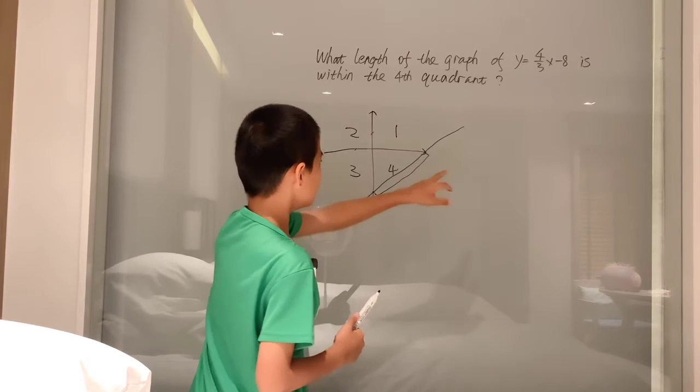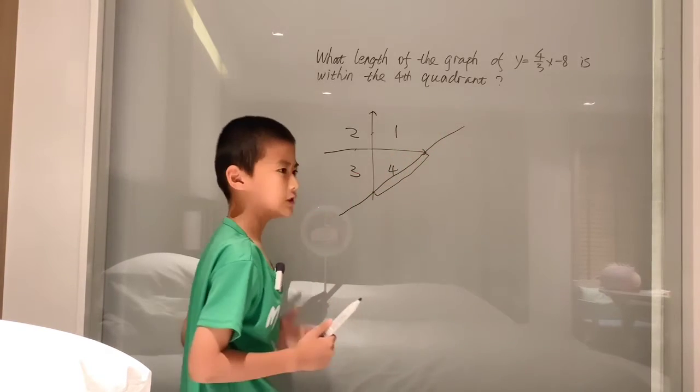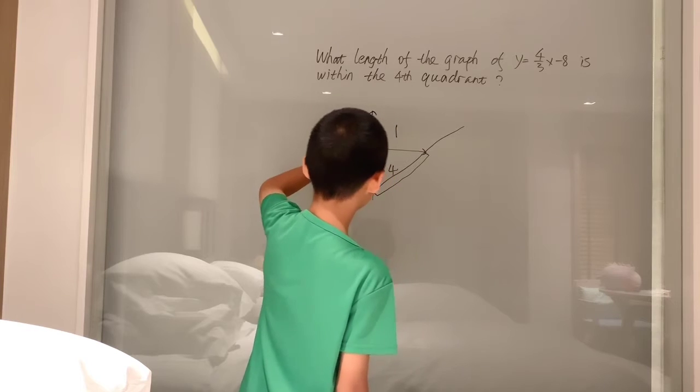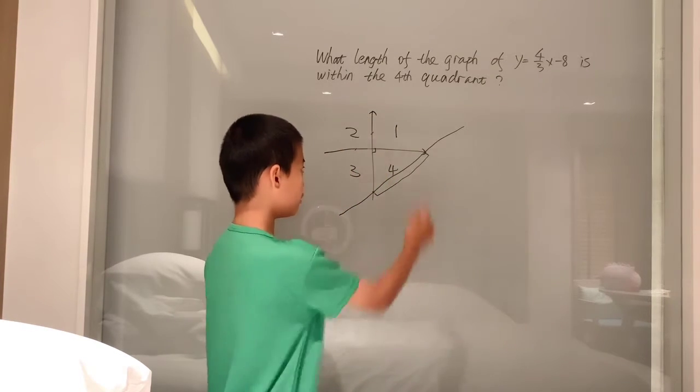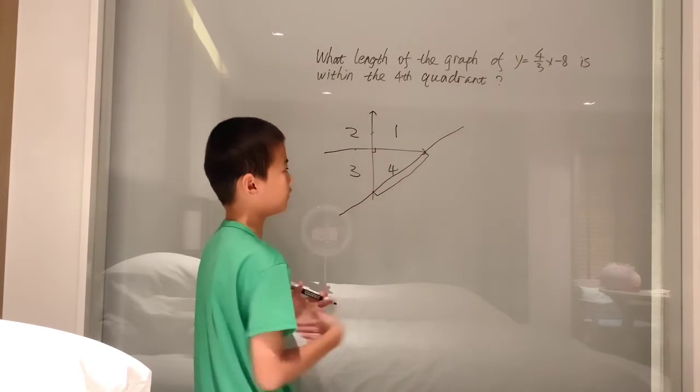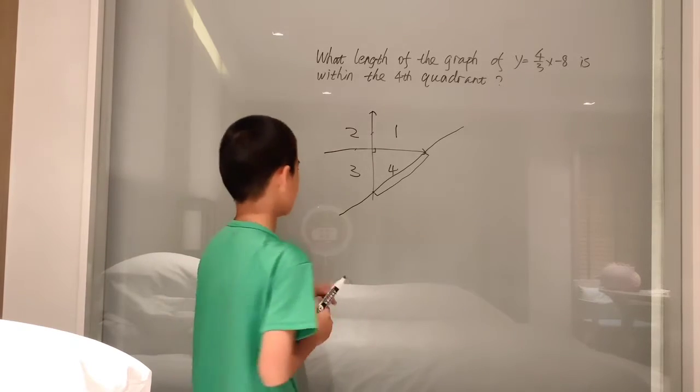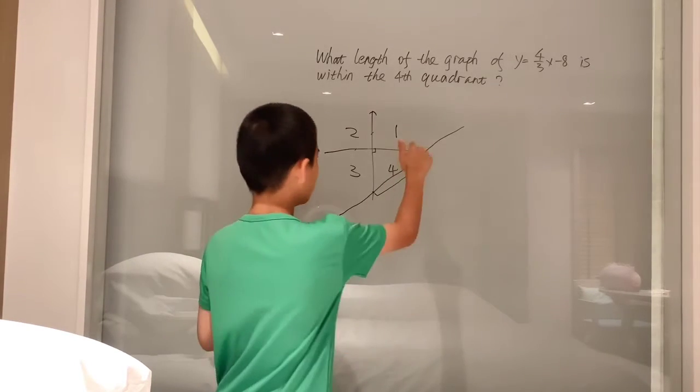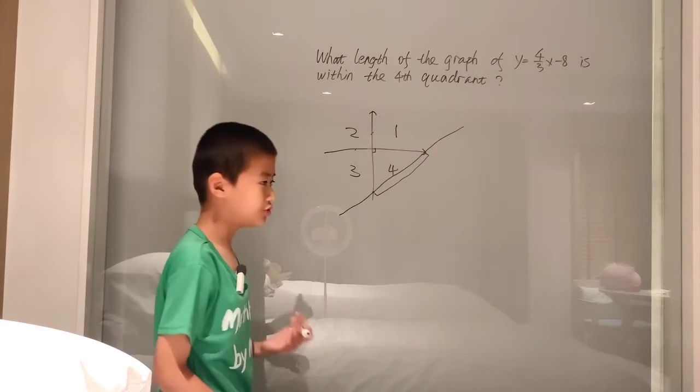So, we don't have to think about this coordinate plane anymore. We can think, well, this is a right triangle, right? And we just want to define the length of the hypotenuse. Well, to define the length of the hypotenuse, you use the Pythagorean theorem, right? a squared plus b squared equals c squared.